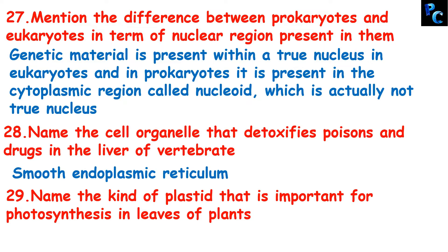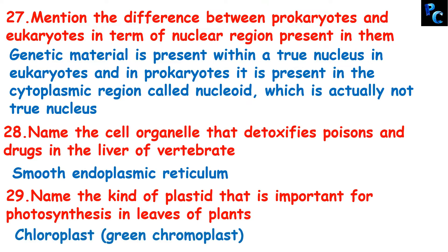Name the kind of plastid that is important for photosynthesis in the leaves of a plant. The answer is chloroplast, which is actually the green chromoplast. For more details on any organelle, refer to the detailed video series — a full playlist is available in the channel covering all videos of Class 9 Chapter 5, The Fundamental Unit of Life.